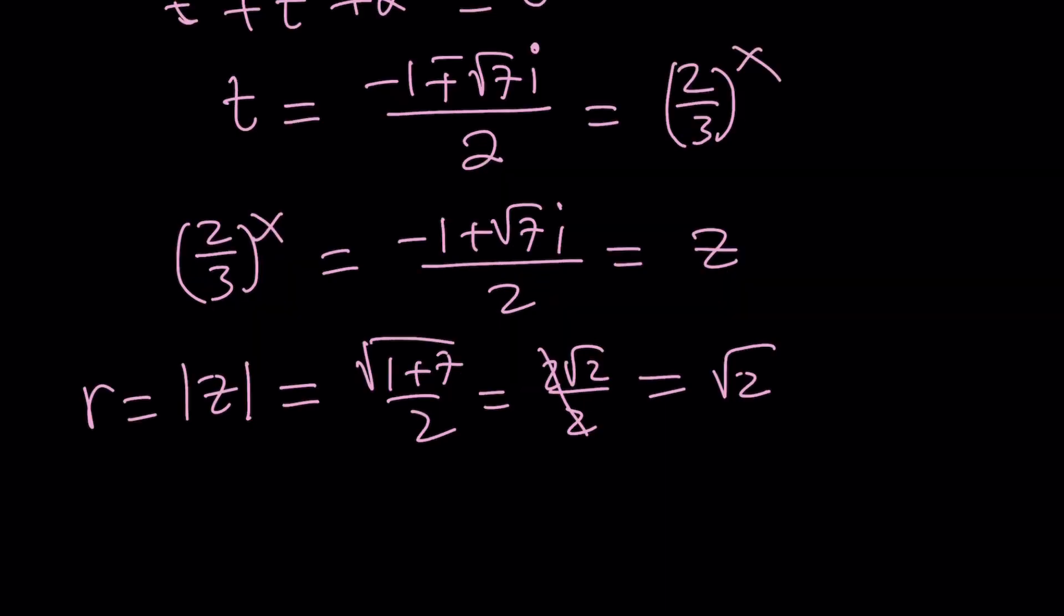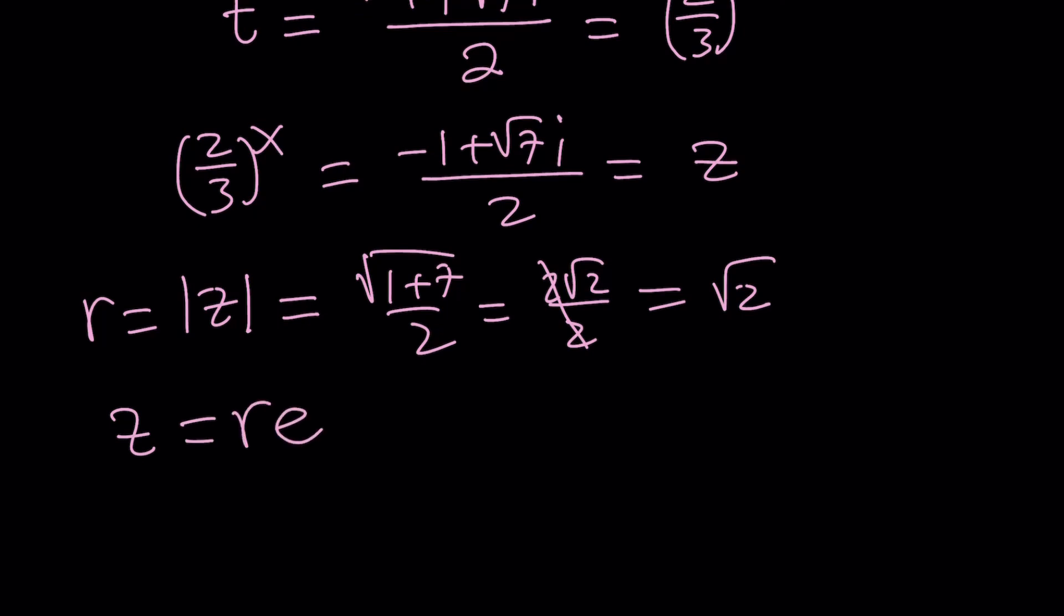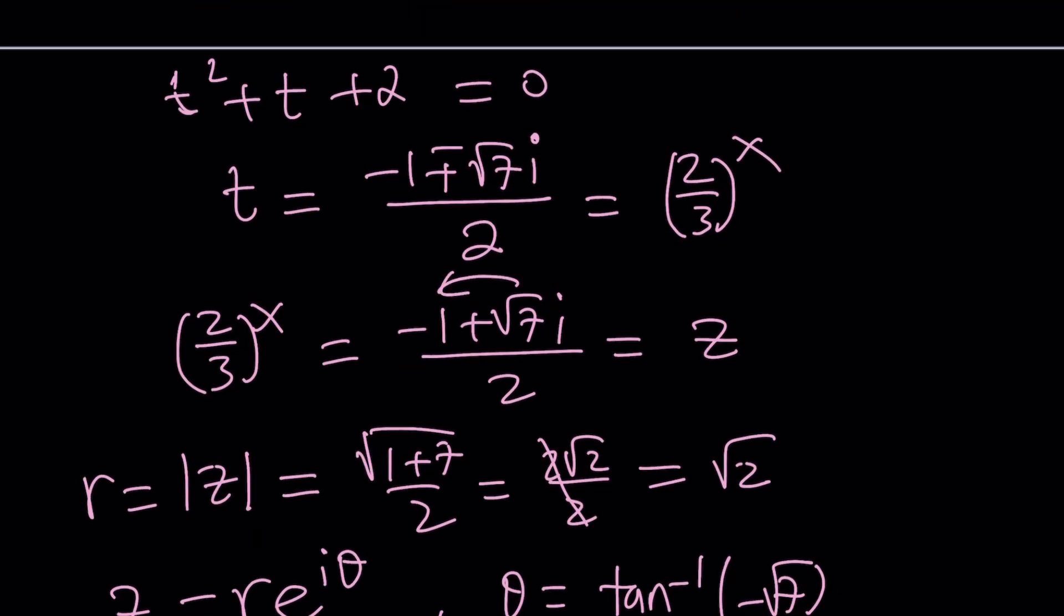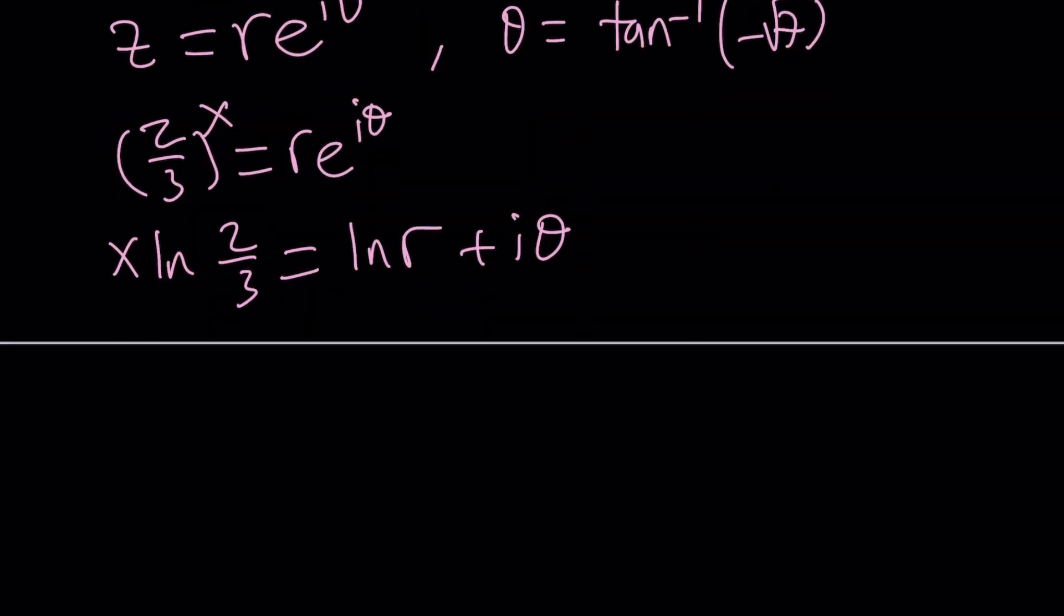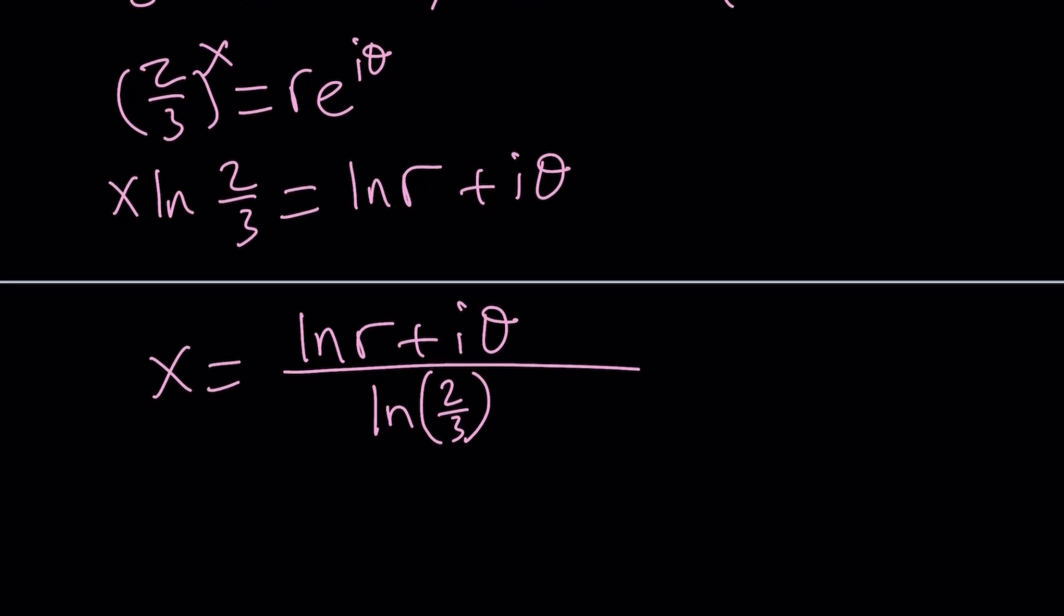So if you go ahead and take out the modulus, you can basically write the complex number in this form. And what is theta? In this case, theta would be tan inverse of negative root 7, I think, because if you look at the tangent, which is y over x. And for the other root, it's going to be positive. So it's kind of like a plus minus anyways. And then you can just go ahead and write your number that way. Basically, you get two-thirds to the power x equals r times e to the power i theta. And then you can go ahead and do the logs. x ln two-thirds equals ln r plus i theta, and then divide by ln two-thirds. And you're going to get the answer. And what is theta? I already told you it is tan inverse of something. And then this should give you the complex solutions.